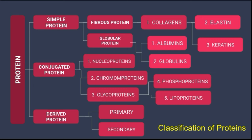There are various forms of fibrous protein: collagen, elastin, and keratin. Globular proteins also have various forms — the two main forms are albumins and globulins. These are the subtypes of simple proteins.